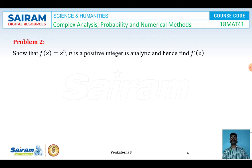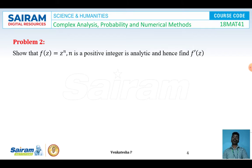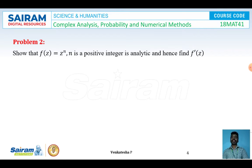Problem number two: show that f(z) = z^n, where n is a positive integer, is analytic, and hence find f'(z). Since z = x + iy makes the expansion complicated, we use the polar form z = r·e^(iθ) for this problem.